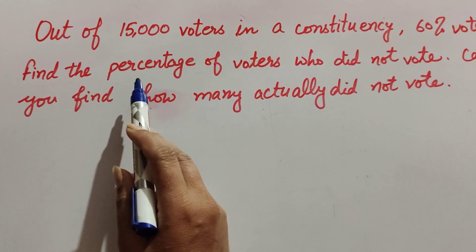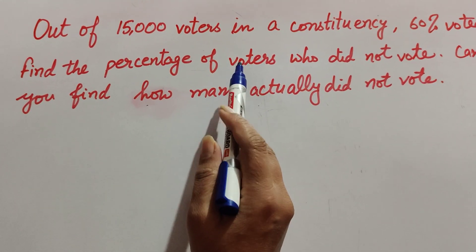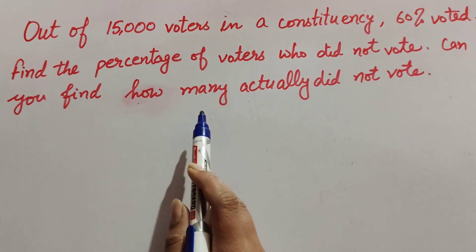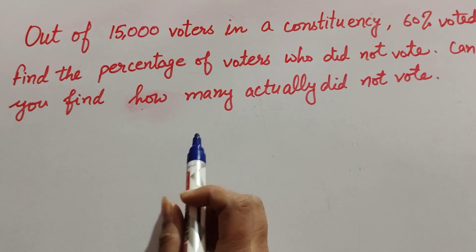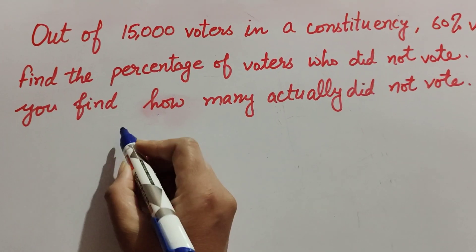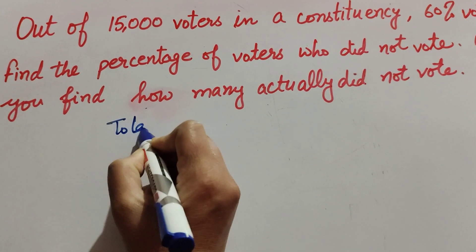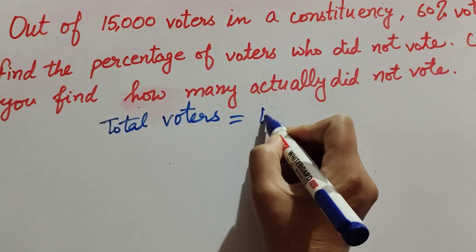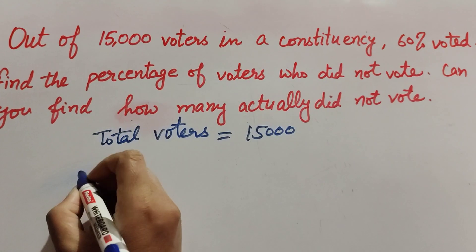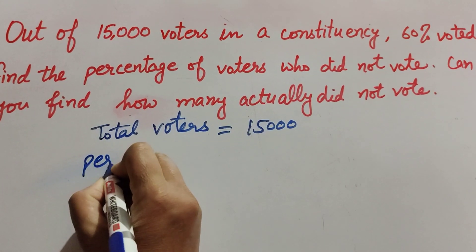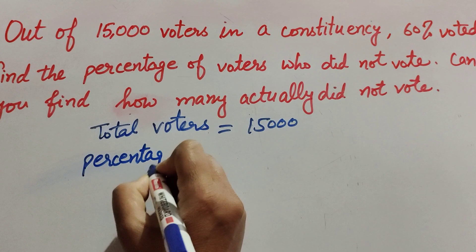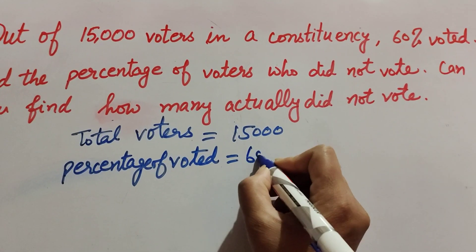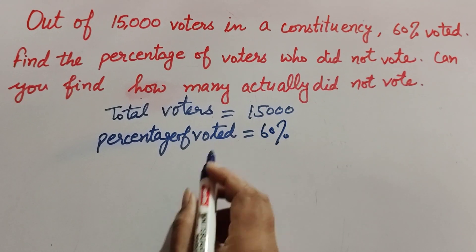There are two questions. First, we find the percentage of voters who did not vote. Secondly, we find the number of voters who actually did not vote. Total number of voters is given — total voters equals 15,000. Percentage of voters who voted equals 60%. So there are two types of voters: those who voted and those who did not vote.